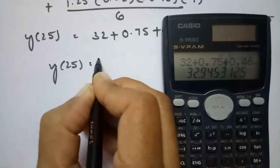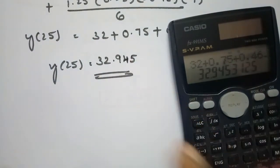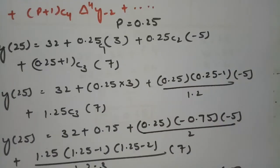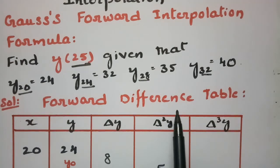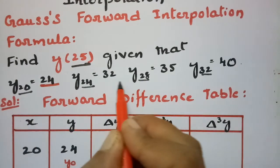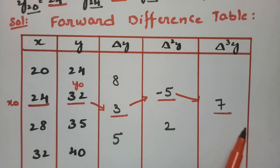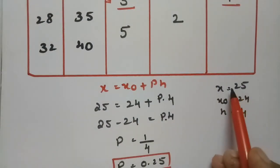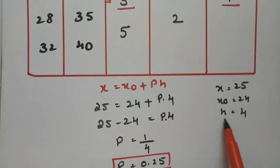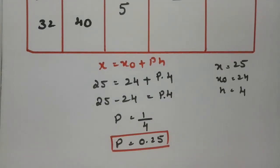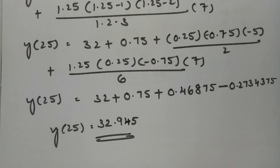Therefore, y at 25 is equal to 32.945. To summarize: the x values were 20, 24, 28, and 32 with y values 24, 32, 35, and 40. After building the difference table and identifying x naught equals 24, h equals 4, and p equals 0.25, substituting into Gauss's forward interpolation formula gives y(25) = 32.945.